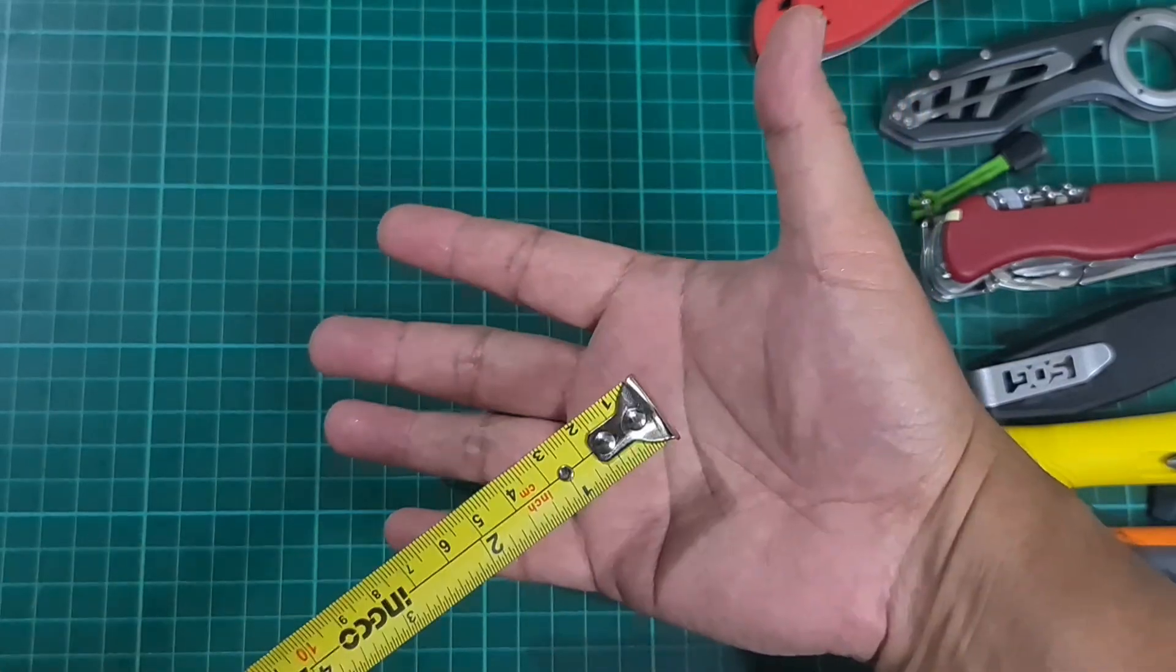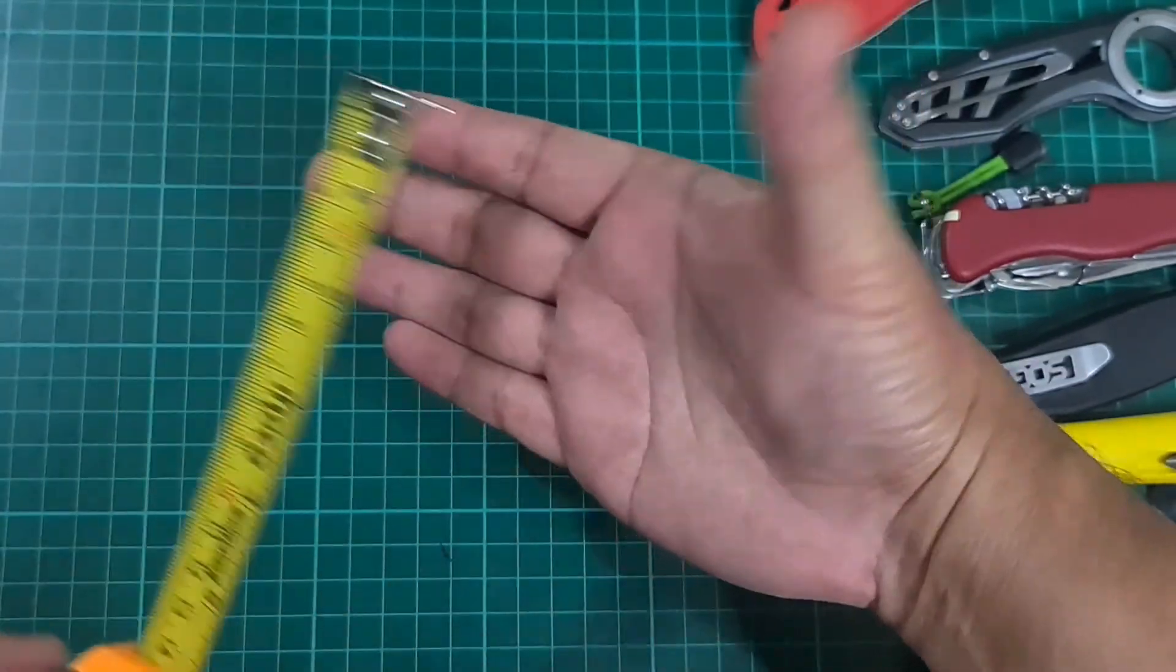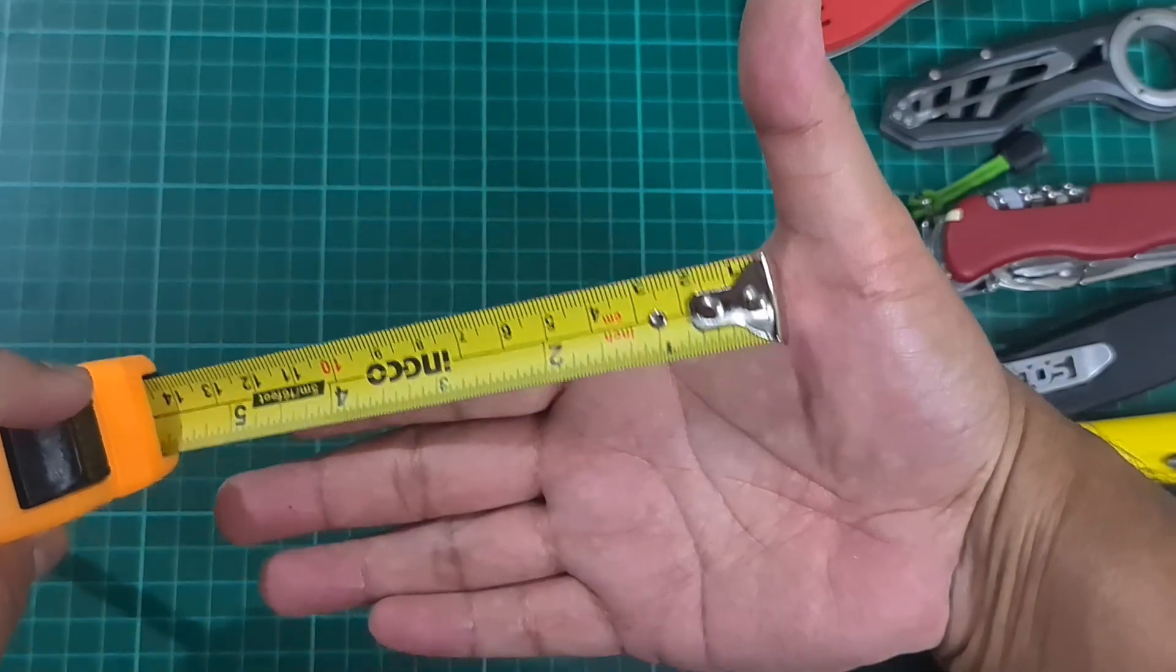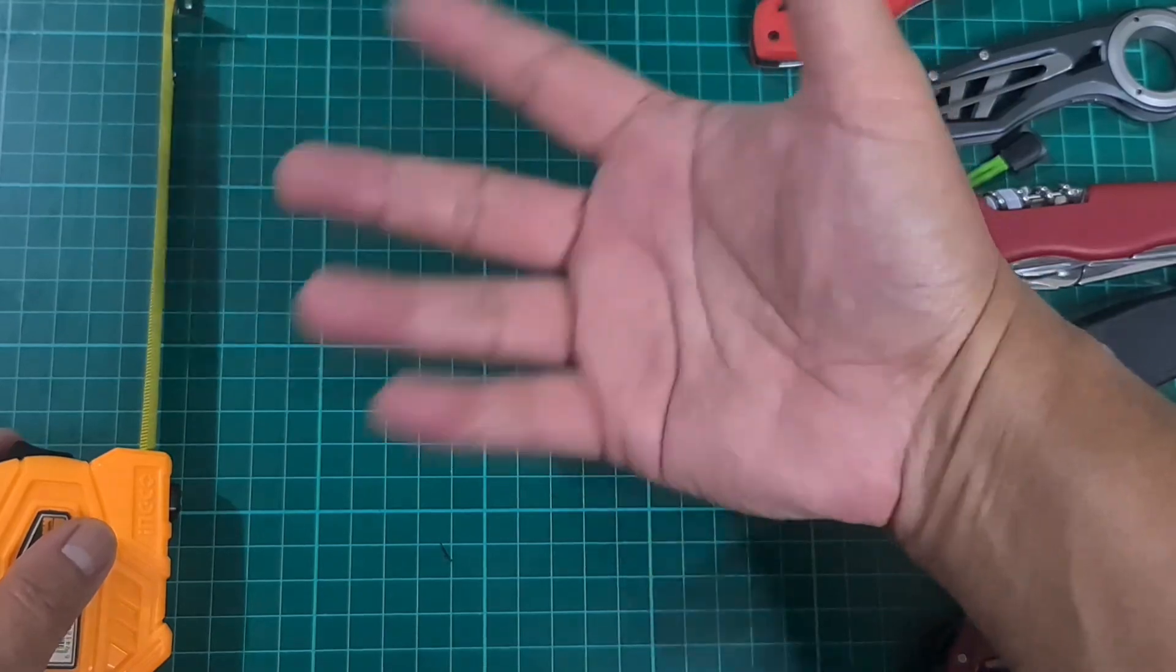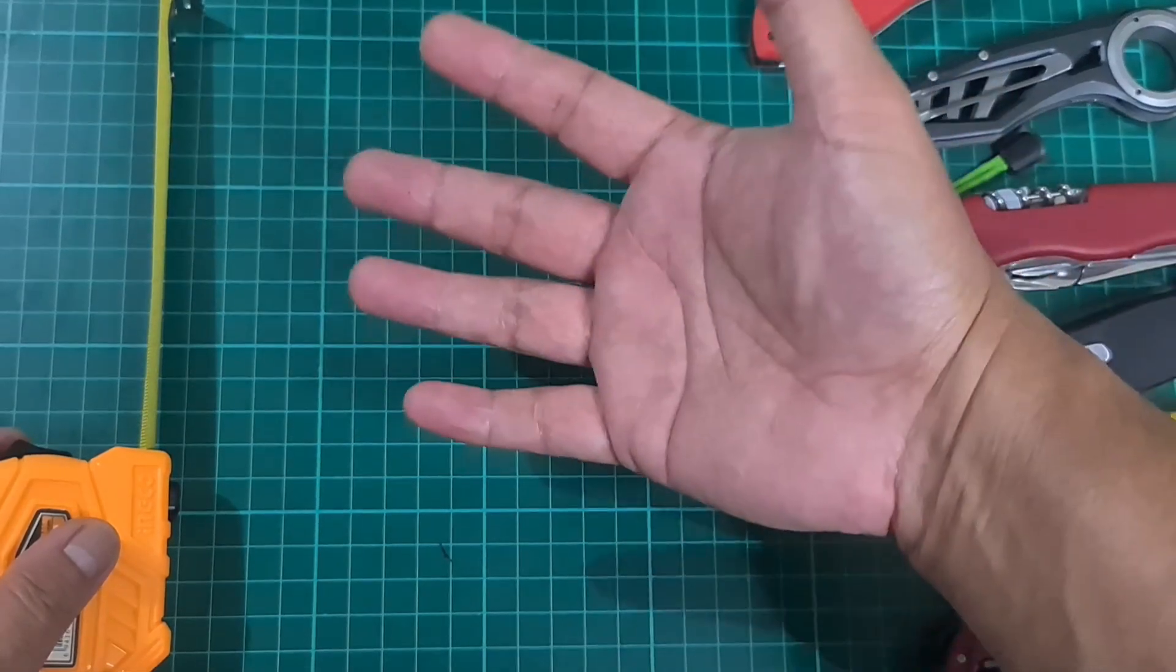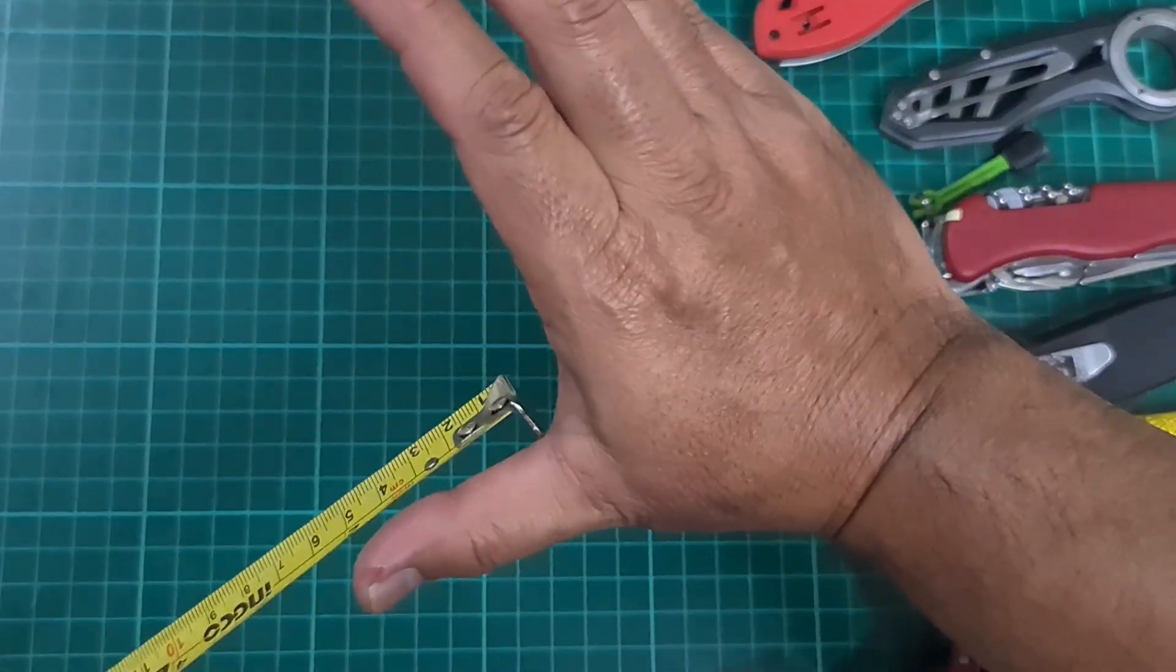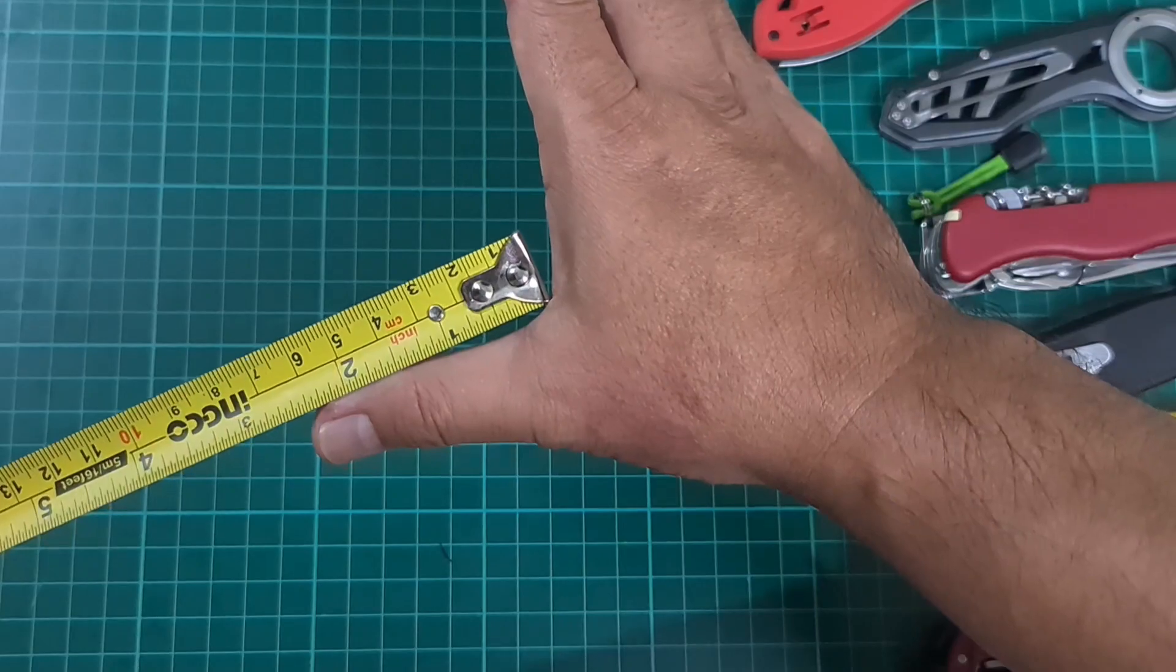The base of my thumb to the base of my forefinger, which is part of the grip, is four and a half centimeters or 1.7 inches. My average finger length is around six to seven centimeters or 2.3 to 2.75 inches, and my thumb length is six and a half centimeters or close to two and a half inches.